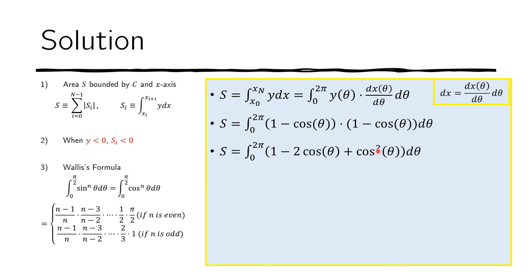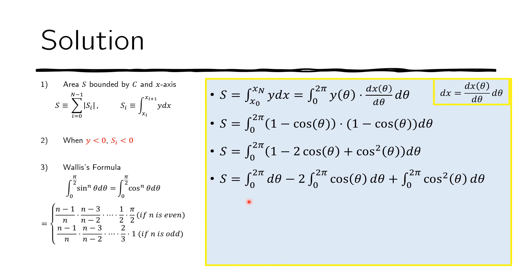We can separate the integral into three terms. The first term is straightforward to integrate. The second term — involving cosine — goes to 0. The third term we can handle using Wallis formula. Let me remind us why the middle term goes to 0: we're integrating a cosine function from 0 to 2π.